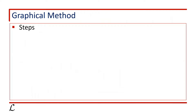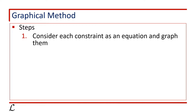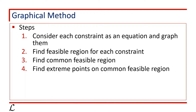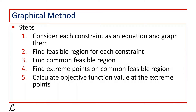Let's revisit the steps to solve LPP using the graphical method. Step 1 is to consider each constraint as an equation and graph them. Step 2 is to find the feasible region for each constraint. Step 3 is to find the common feasible region. Step 4 is to find extreme points on the common feasible region. Step 5 is to calculate the objective function value at these extreme points and finally conclude the results.